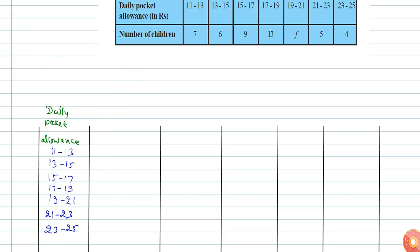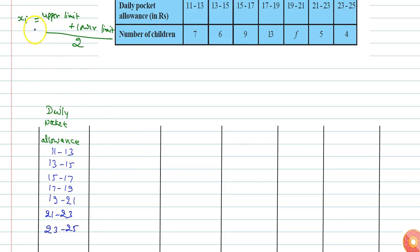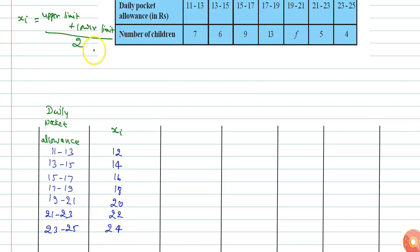Since the data is given as intervals, I can calculate Xi for each interval as the average: upper limit plus lower limit divided by 2. So 11 plus 13 by 2 gives the second column for Xi. The values are: 12, 14, 16, 18, 20, 22, and 24.